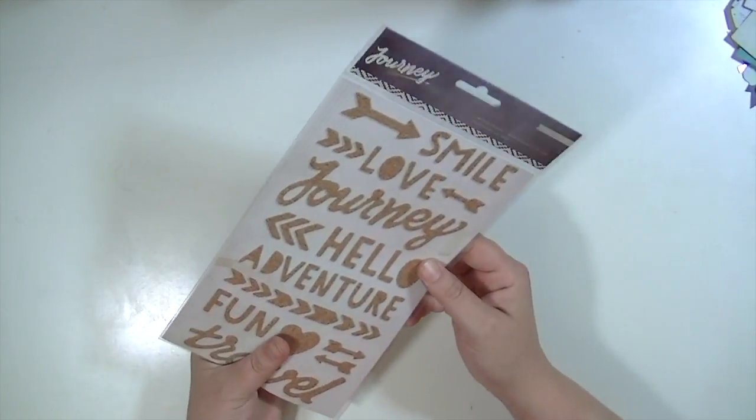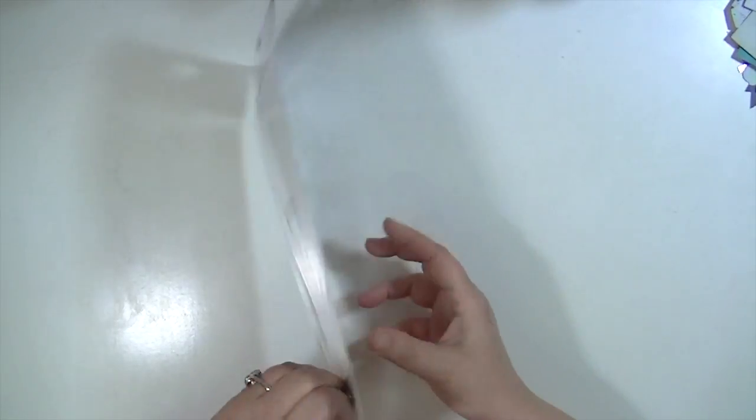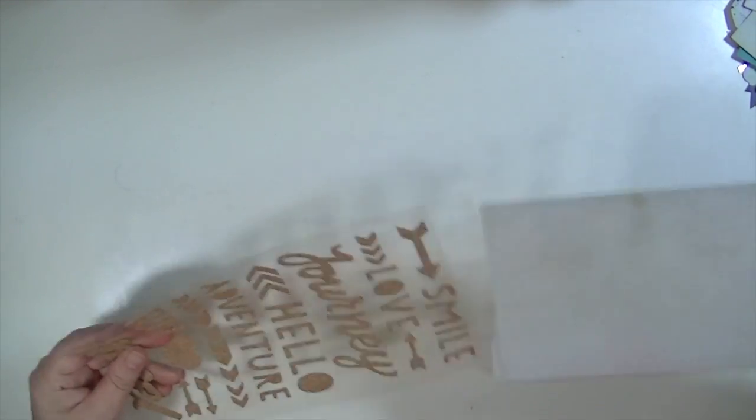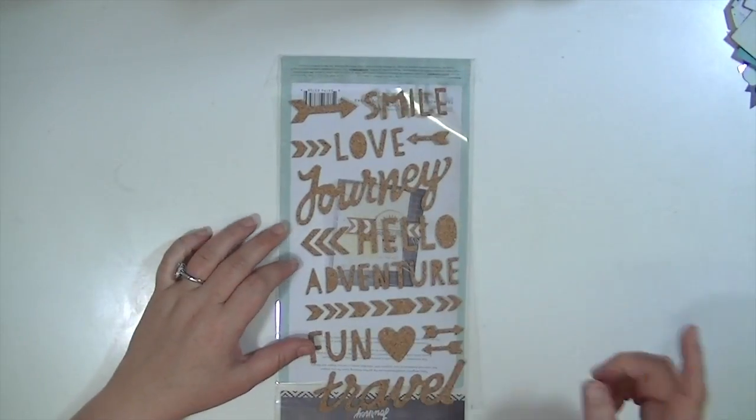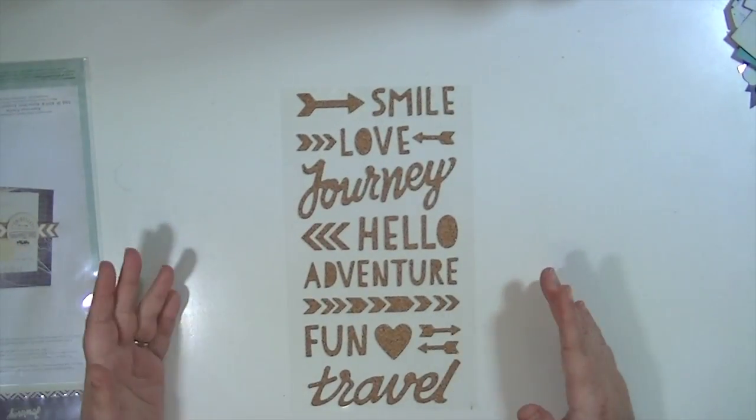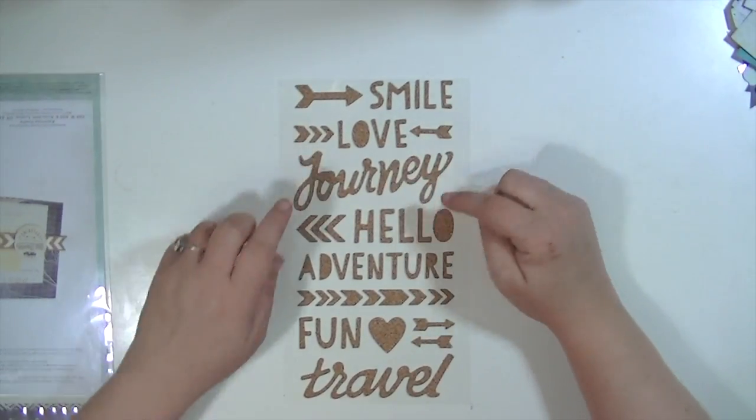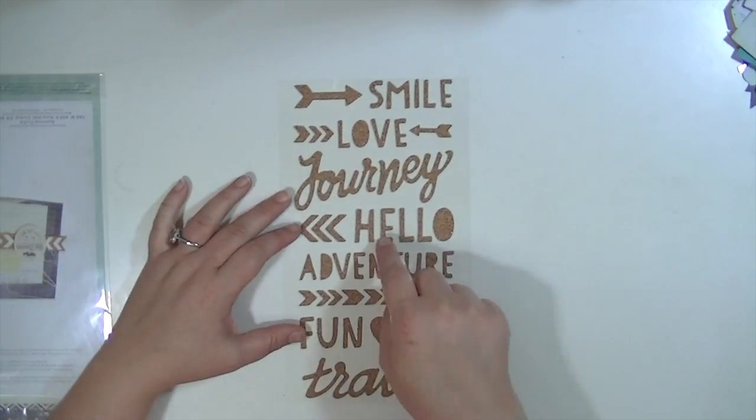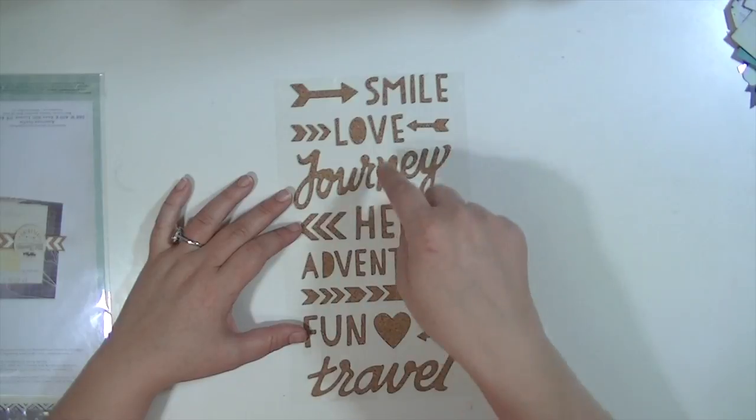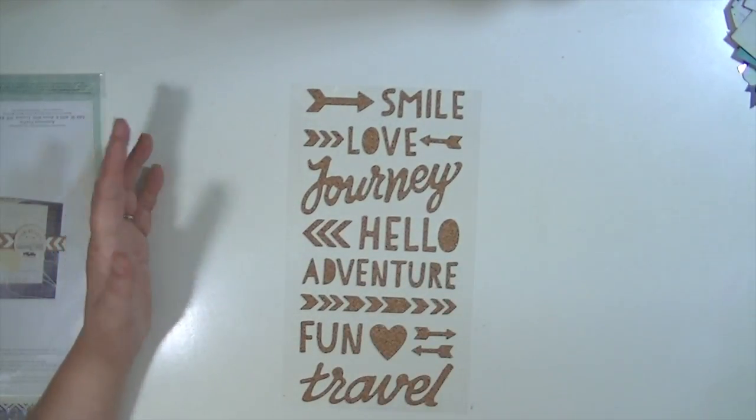These are super cool. These are from the Crate Paper Journey line, and they're 45 quirk stickers. It says 45, but to me they count each individual letter. But there's a lot. You get some arrows, and then some directionals, and then some different words. One good thing about them being separate is that if you wanted to spell something else, you could combine these and make up your own word.